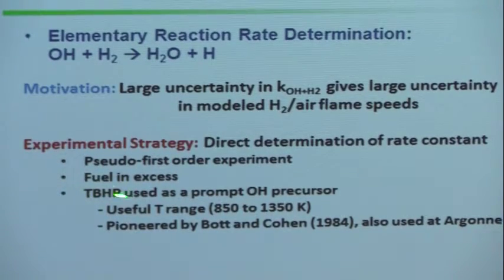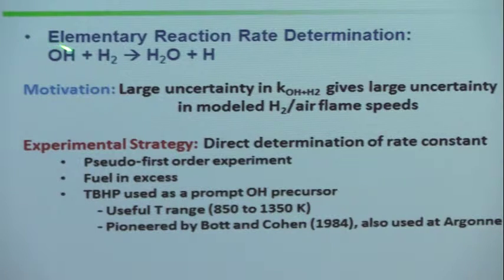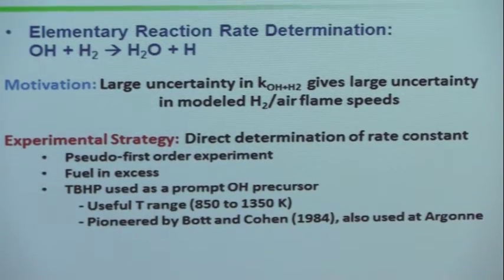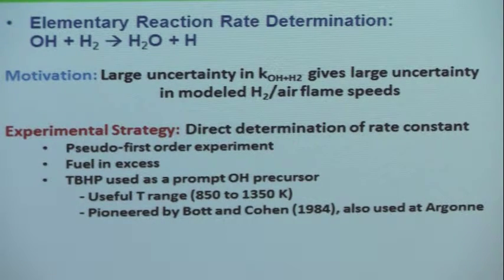Tert-butyl hydroperoxide is a chemical which, when raised to a temperature in this range, kind of instantly gives you an OH molecule. You would use a tracer of TBHP in your mixture with hydrogen. At time zero, you essentially produce OH, which would react with hydrogen. You can't buy a bottle of OH — that's the problem. So you use this trick, which works in a temperature range of about 500 degrees.